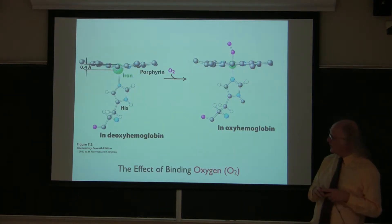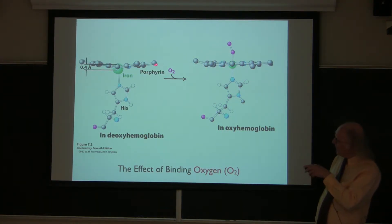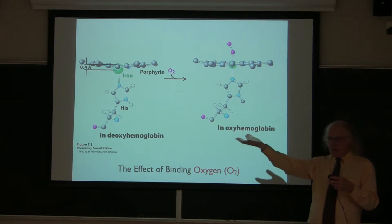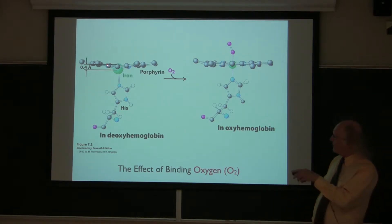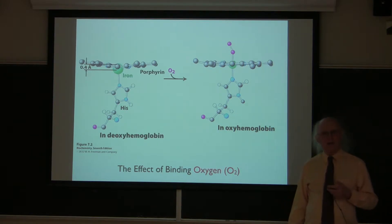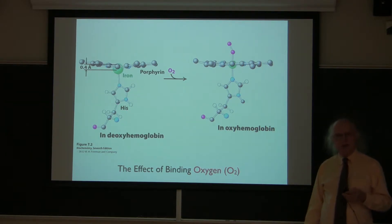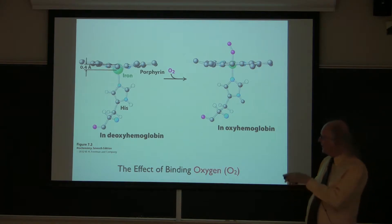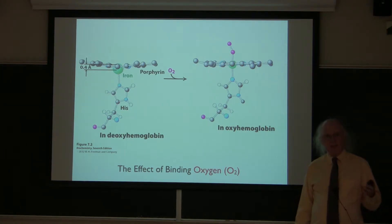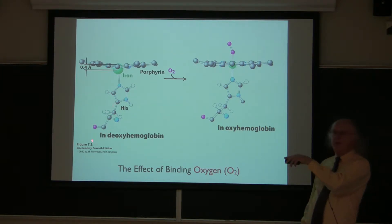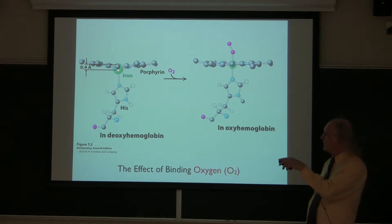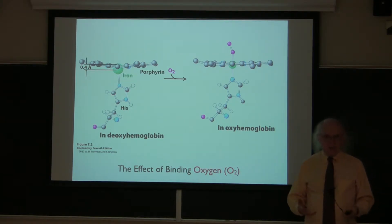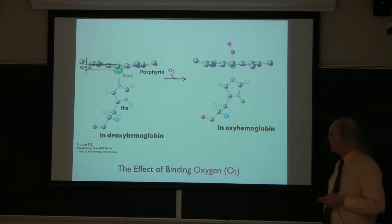We can see now that the heme's flattened structure, which is actually a little bit concave downwards, has an iron atom in the middle. The iron atom is attached to an amino acid of the protein subunit known as histidine. Histidine is part of the polypeptide chain that makes up that subunit, attached to the next amino acid and so on through the chain. It's this linkage between the iron of the heme group and the histidine of the polypeptide chain that gives hemoglobin some of its very important properties.